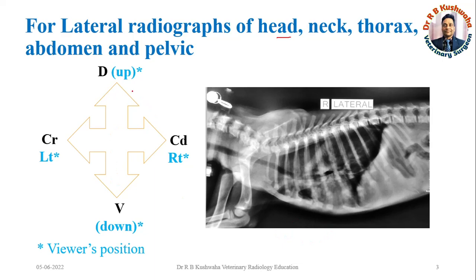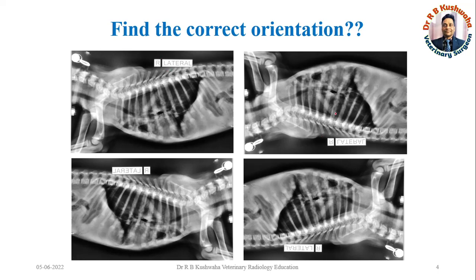You can understand this by looking at the picture. Whenever you have a lateral view, you should display it in this correct orientation. Find the correct orientation among these four — this one is correct, whereas the remaining three are incorrect. You could identify the thoracic cavity and abdominal cavity in the others, but there is difficulty because our mind has a consistent picture. That is why it is very important to place the radiograph on the X-ray illuminator in the right orientation.